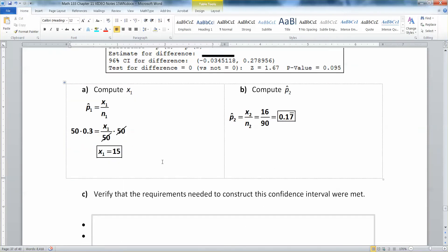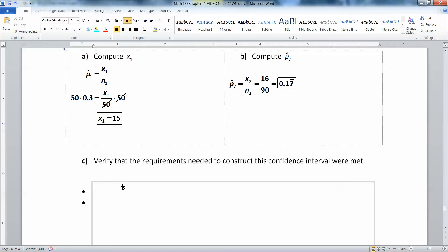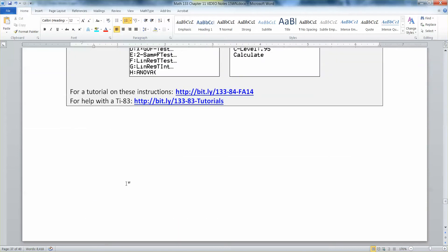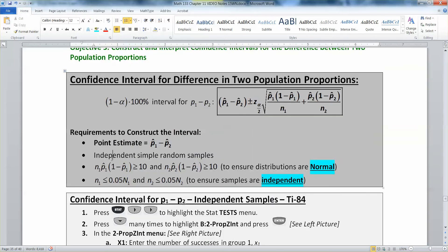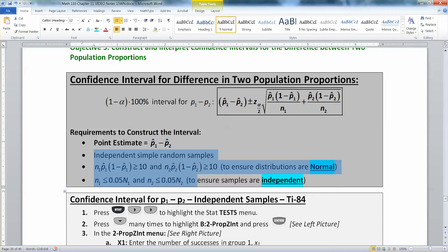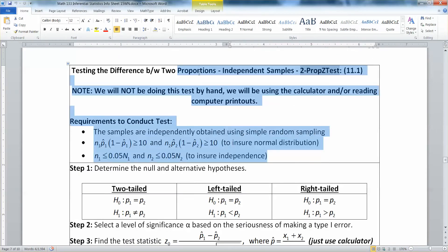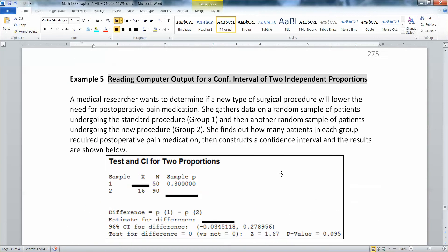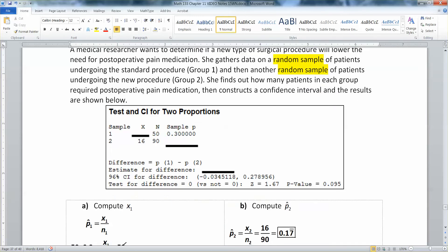Part C: Verify that the requirements needed to construct a confidence interval were met. The requirements to construct the interval are the same as the requirements for the hypothesis test. Let me scroll back up here. You need to have independent simple random samples. N times P times 1 minus P has to be greater than 10, and the samples need to be independent and all that. It's the same that's written here for the 2-prop Z test as for the 2-prop Z interval. So we need these to be simple random samples, and I believe that's given right here. It says it's a random sample of patients right there, and then another random sample right here. And they're completely separated, so they're independent simple random samples, no trouble. Those are given in the problem.